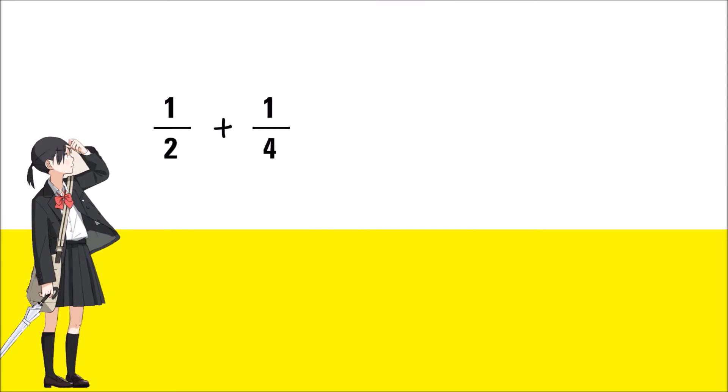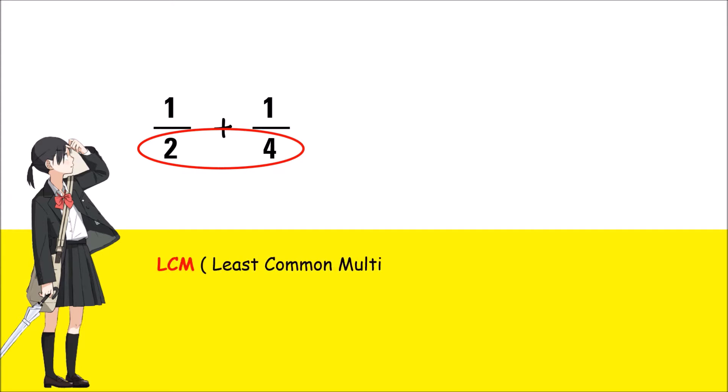Given two unlike fractions: 1 half plus 1 fourth. Make the denominators the same by finding the least common multiple, or LCM, of their denominators. This step is exactly the same as finding the least common denominator, or LCD.